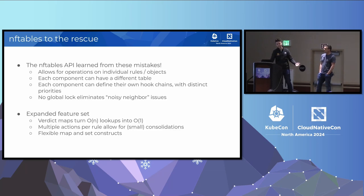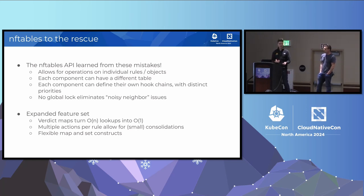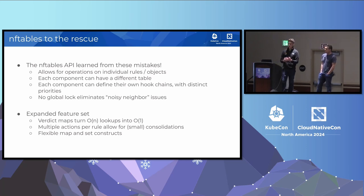Luckily, we have nftables. The nftables API improved on a lot of these limitations. For one, you can operate on individual objects — you can modify an individual rule, chain, set, map, et cetera — and you don't need to download and re-upload the entire rule set every time. In addition, each component can define their own tables, specify their own hook chains with distinct numeric priorities, and this means there's no fighting. It becomes very easy to see exactly what order things are going to be implemented.